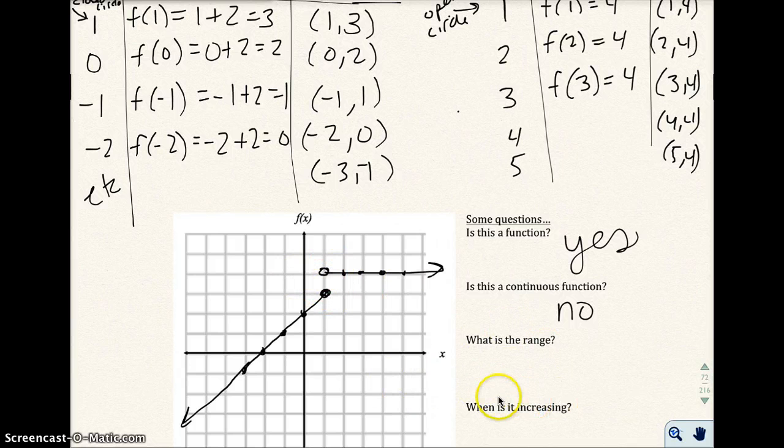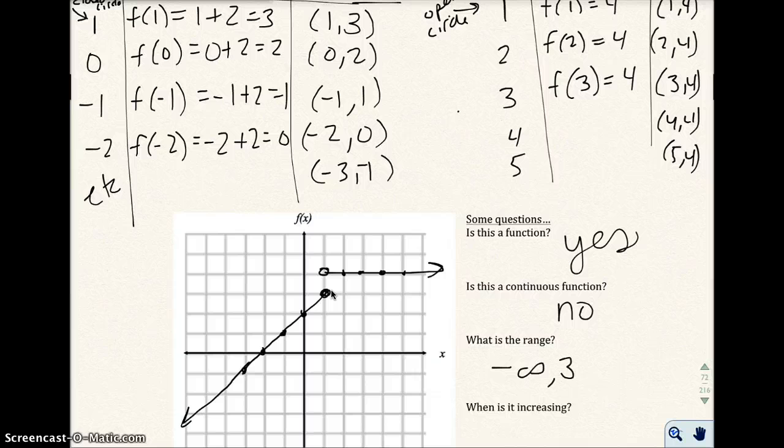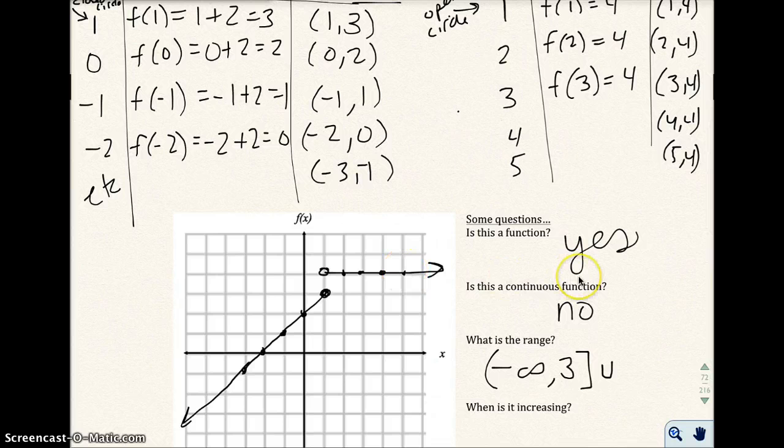What is the range? The lowest point for y is down here, and it goes on forever, so it's negative infinity. And it goes all the way up to 3. We're going to include the 3. This symbol means or. The range is from negative infinity to 3, or 4. We're going to include the number 4.